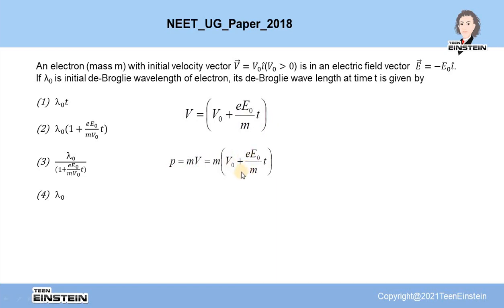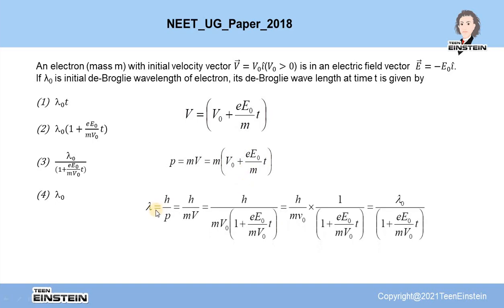Now we can find out, according to de Broglie's hypothesis, lambda equals h by p. So p means mv, and this value we can put here. Look here, if we just take v0 common, then we get h by mv0, whole into 1 plus small e into capital E0 divided by m into v0 into t.